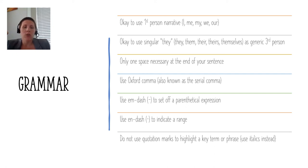Use the Oxford comma, also known as a serial comma. Basically, the Oxford comma is a comma used at the penultimate item in a list of three or more items before the and or the or.